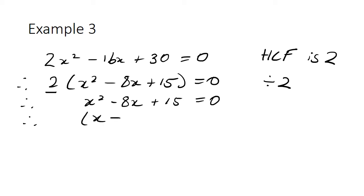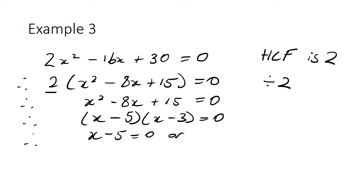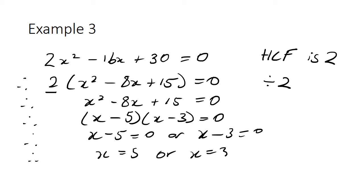Now we can factorize this as before: x take 5 times x take 3 equals 0. Therefore x take 5 equals 0 or x take 3 equals 0. Solving both of those: x equals 5 or x equals 3. So that's our third example done.